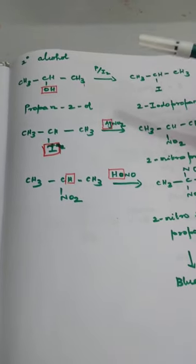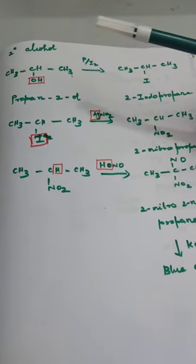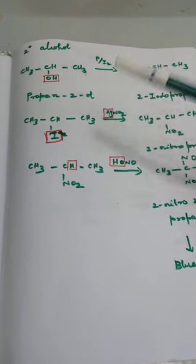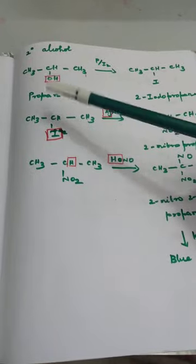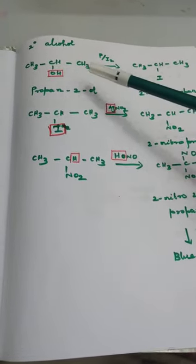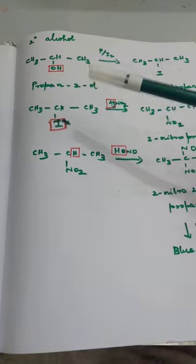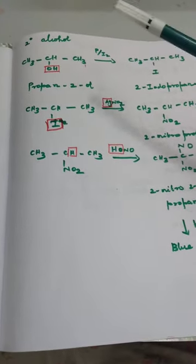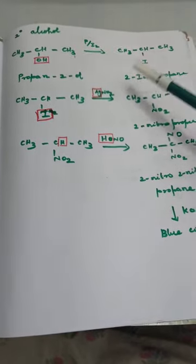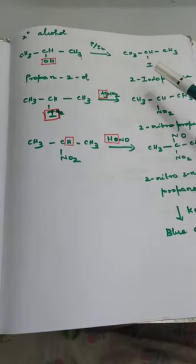Now let us look at the reaction with secondary alcohol. In a secondary alcohol, the carbon bearing the OH functional group has two R groups and one H attached. Taking an example with three carbon atoms, this is propan-2-ol. In Step 1, reaction with P and I2 replaces the OH with iodine. The product is 2-iodopropane, since iodine is present on the second carbon of propane.